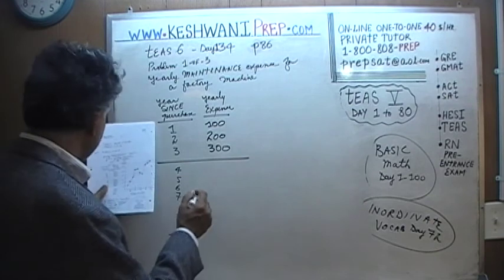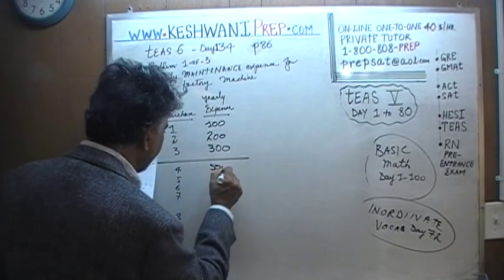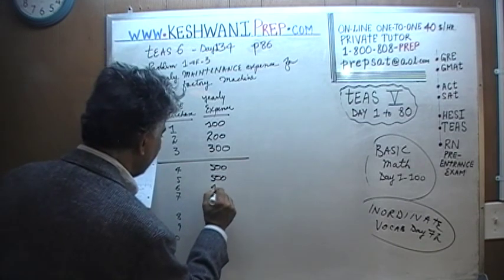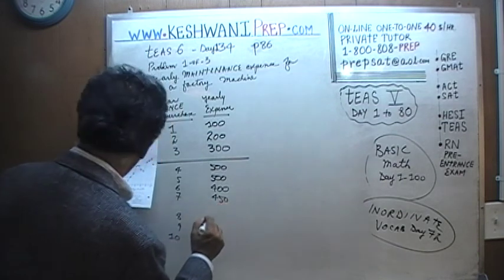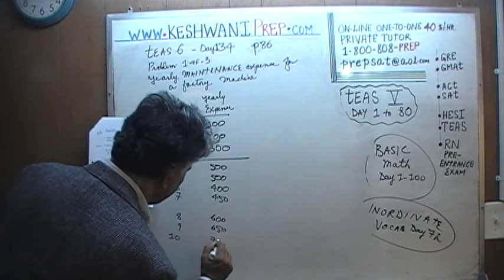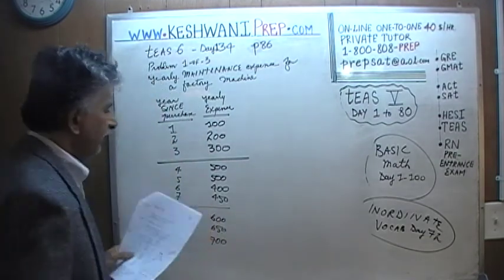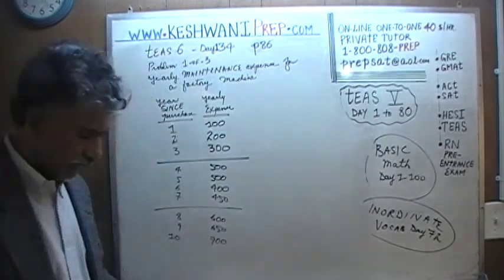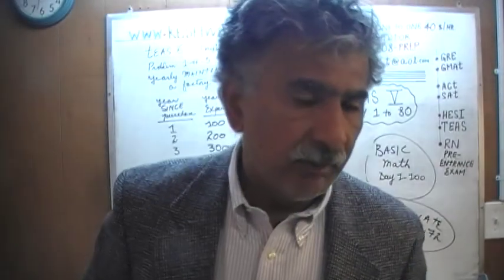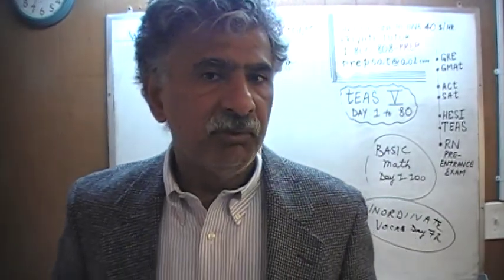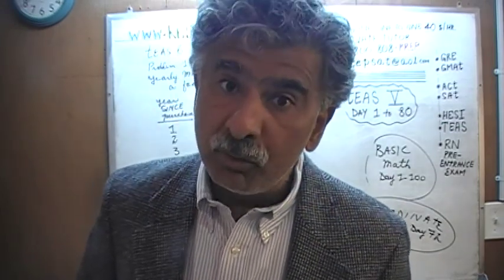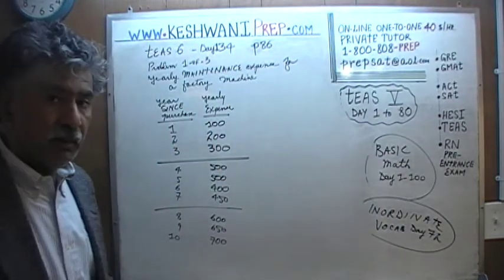In the fourth year, as the machine ages, it costs $500. The fifth year, it costs the same amount — $500. Then it goes down to $400 in year six, $450 in year seven, then $600 and $650, and finally the last year it costs $700 to maintain the machine. The reason I put these figures on the blackboard is because they are not given directly in the book — the book gives us the chart, and I want to make sure we understand where the chart is coming from.